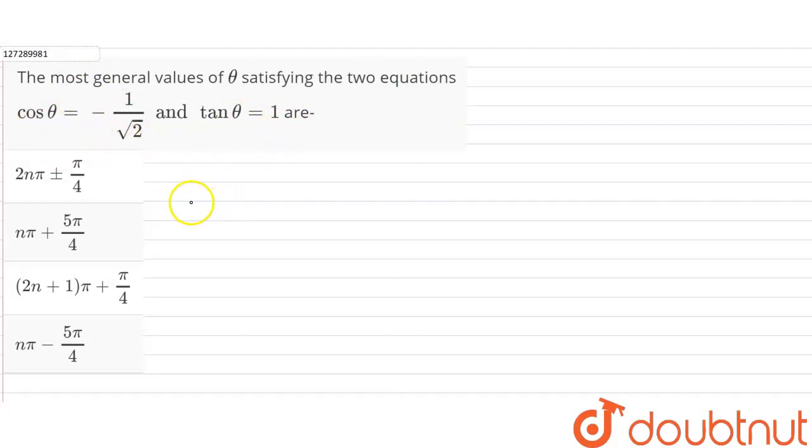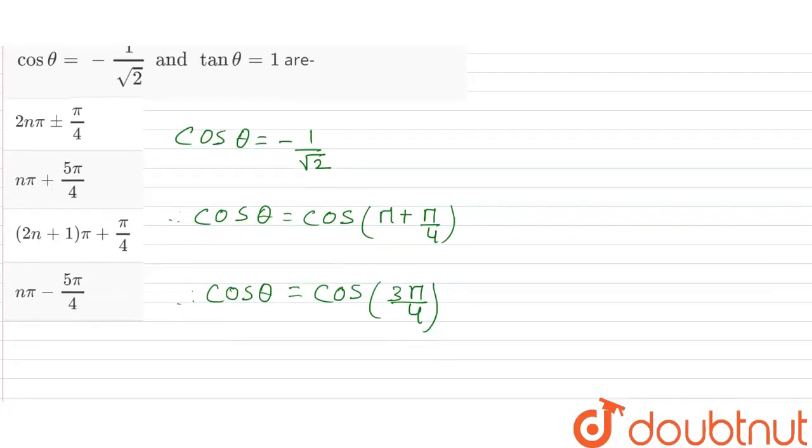Let me write this down. This is the equation: cos theta equals minus 1 by root 2. Therefore, cos theta equals cos of pi plus pi by 4. Therefore, cos theta equals cos 3 pi by 4.